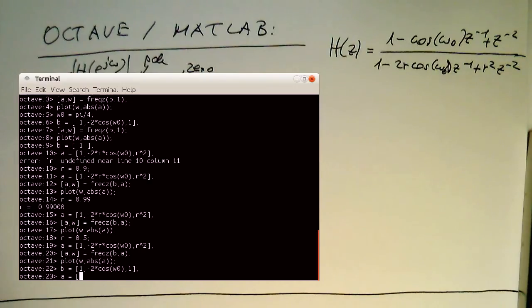And then the A's are our recursive here. That's 1 and that's minus 2 times R and then cos omega zero. And then here, let's add the back, it's minus R square and bracket.